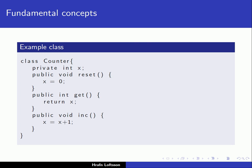Here we have an example class — the counter class that we implemented as an abstract data type earlier, written in our pseudo-language. The counter is represented as an int, and it is private, meaning it's not accessible to the outside world. Then we have three functions: the reset function, the get function, and the increment function — all public, meaning they are accessible to the outside world. A client could call these functions to manipulate the underlying data.